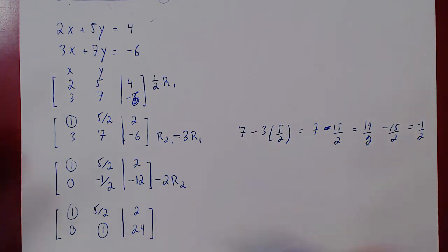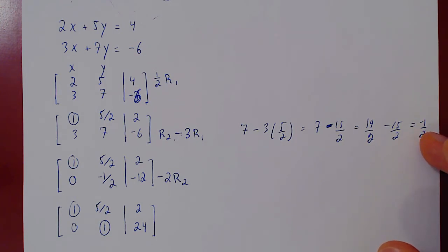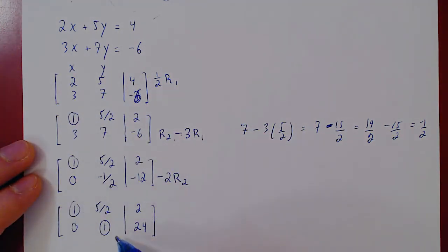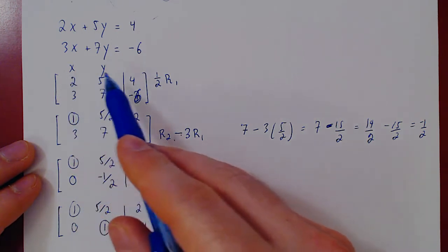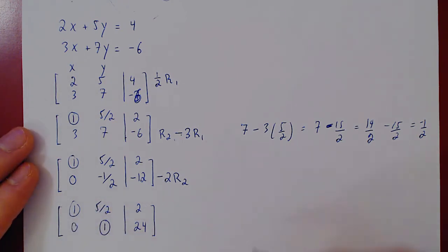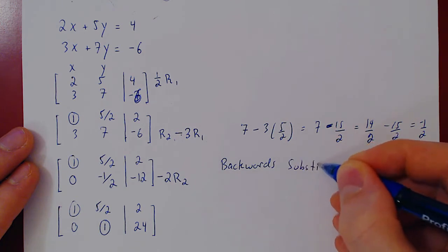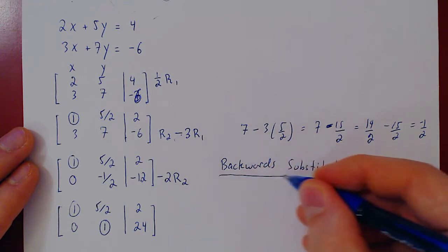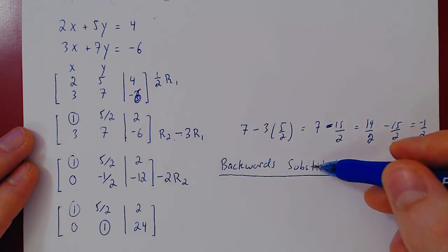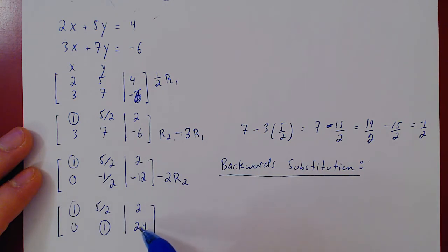We've now reached the bottom row. The question is what do we use? As I said, we have two options: we can use backwards substitution, or Gauss-Jordan elimination. We have two variables x and y — they are both leading variables, as they both have a leading 1. When all variables are leading, this always implies a unique solution. When you have a unique solution, you should always use backwards substitution.